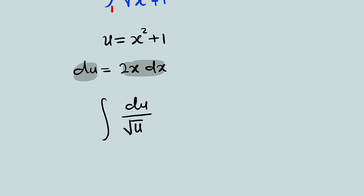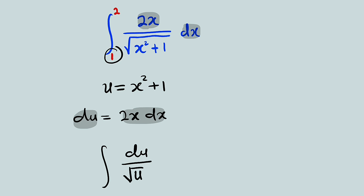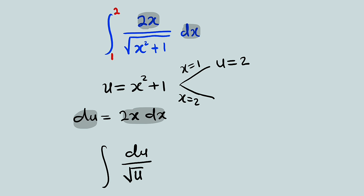Now, what about the limits, because we are going to change them. When x is 1, what will be the value of u? We substitute x equal to 1: 1 squared is 1, plus 1 is 2, so u will be equal to 2. When x is equal to 2, we have 2 squared is 4, plus 1 is 5, so u equals 5. Therefore our limit becomes from 2 to 5.